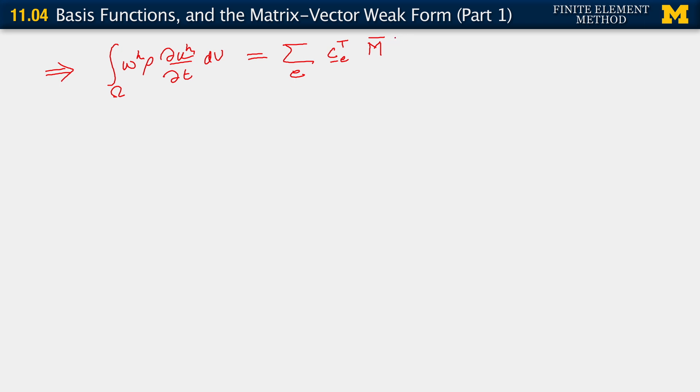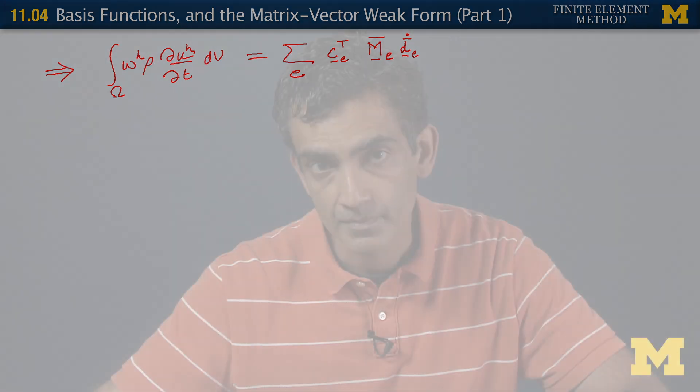M bar e matrix, okay? And that is multiplying a D bar dot e vector, okay? You also know why I'm using bars here, right? Rather than the final forms, because we know that we can have this issue of Dirichlet conditions there.